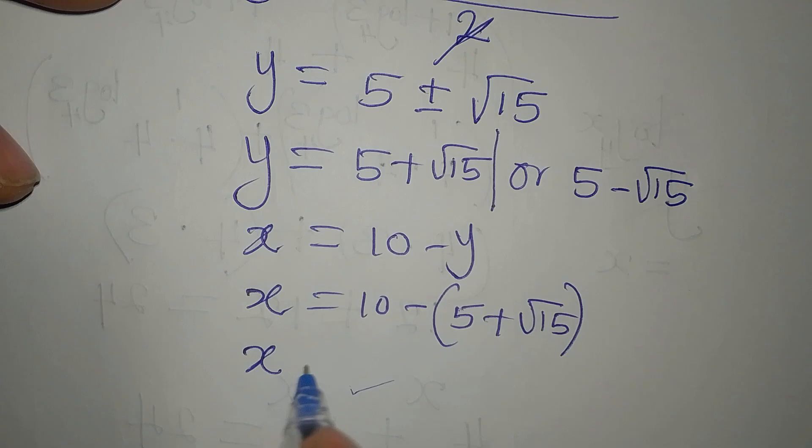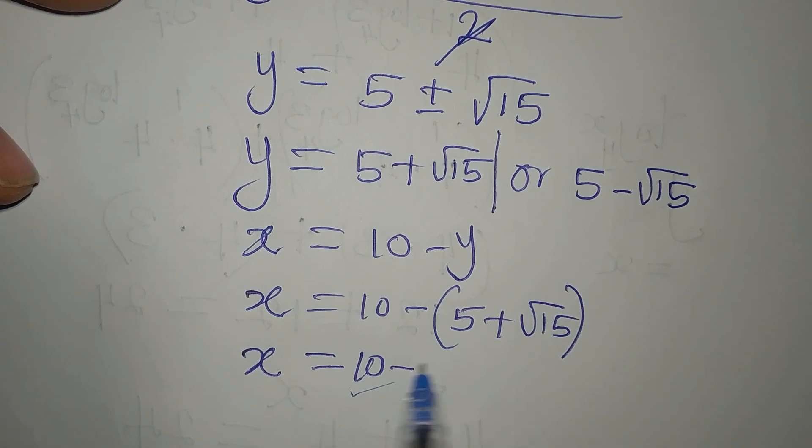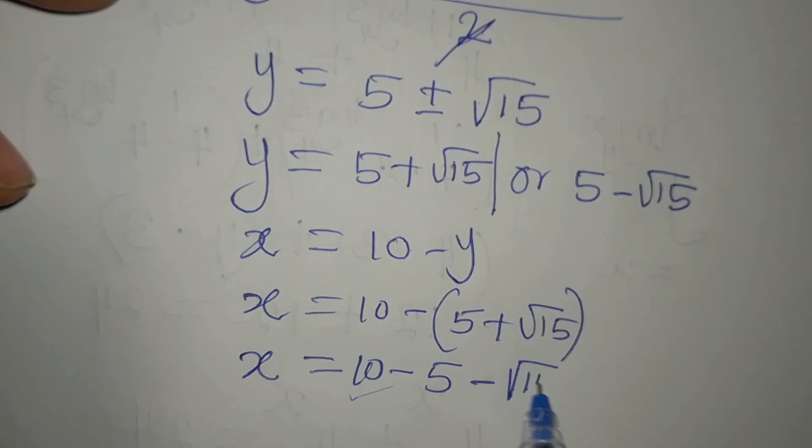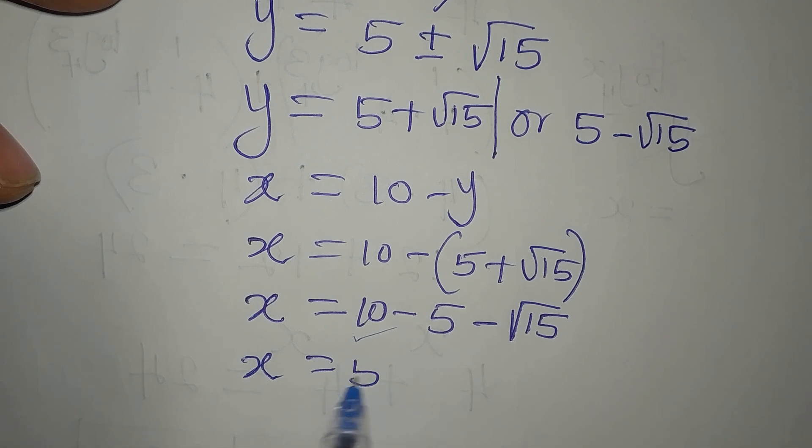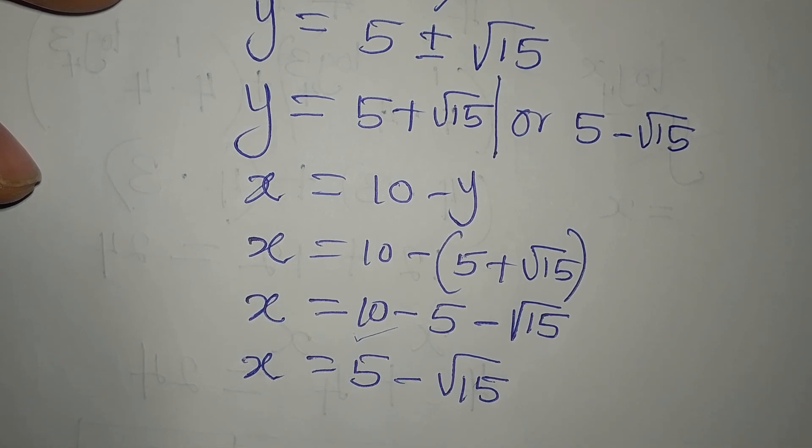So our X, now we are going to open the bracket. So we have 10 minus 5 minus root 15. So X will be 10 minus 5 is 5. Then, we have root 15.